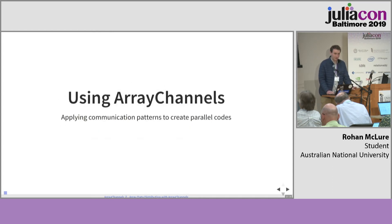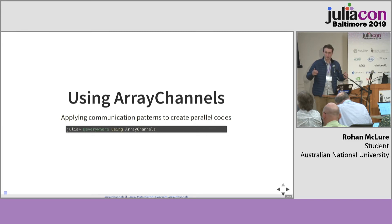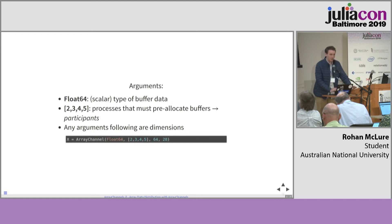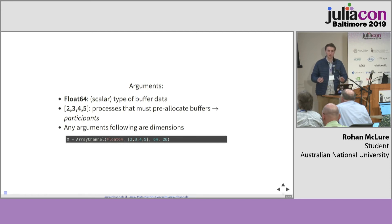How do we use Array Channels? Essentially, it provides us with building blocks for creating our parallel codes. First of all, we can import it using @everywhere, causing all workers to import the library. And we create an array channel — an archetype for a type of communication which you would like to occur in your code. So this is for buffers which are going to contain double precision floats of dimensions 64 by 28, and workers 2, 3, 4, and 5 are going to participate in this array channel. That is, they will pre-allocate a buffer of the correct dimensions and type for this communication.